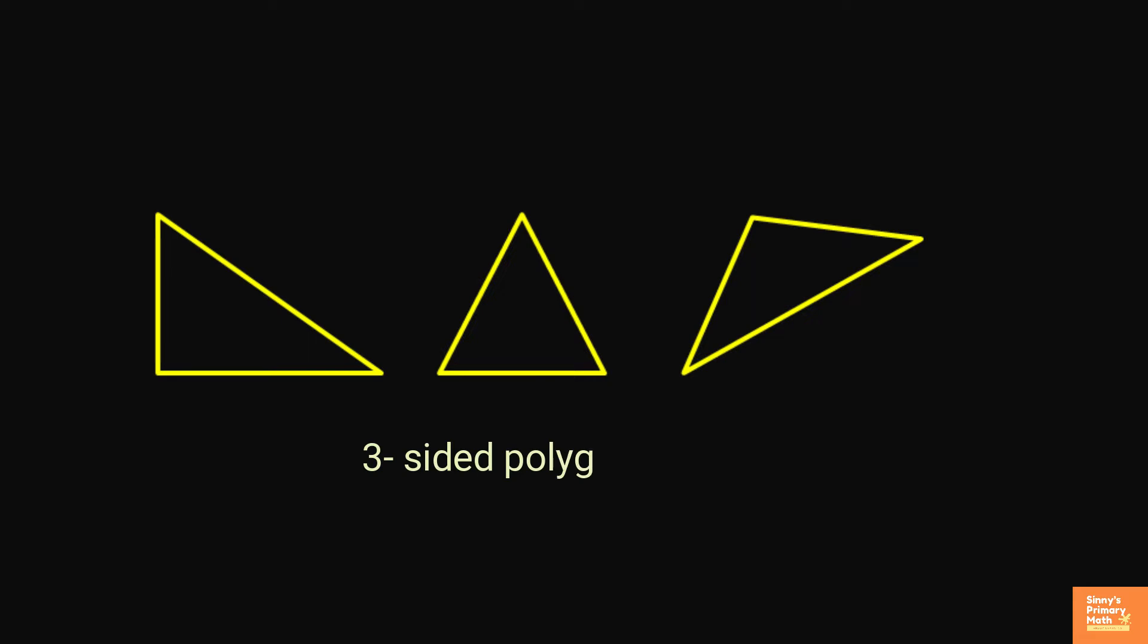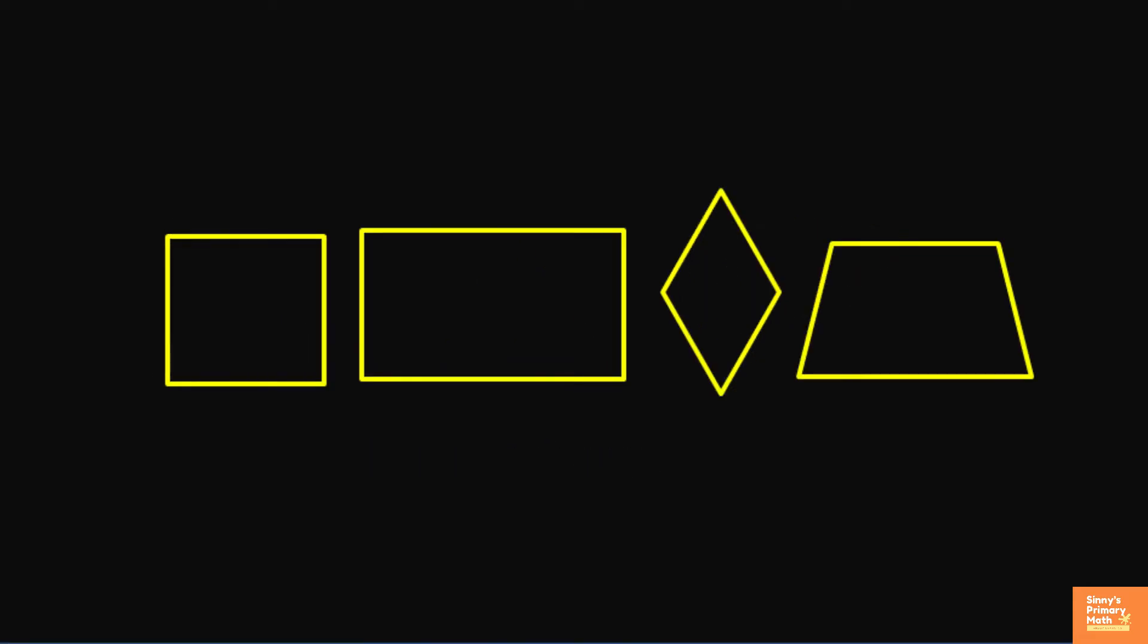For example, three sides triangle, four sides quadrilateral, example square or rectangle. A regular polygon has all sides and angles equal.